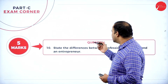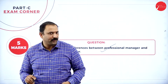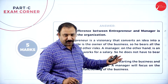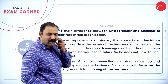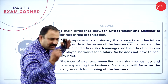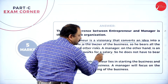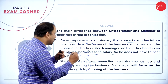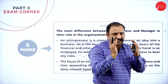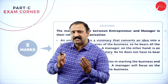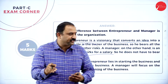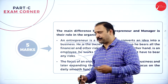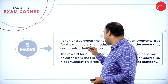Next: state the difference between a professional manager and an entrepreneur. An entrepreneur is a visionary person who converts an idea into a business — he is the owner and bears all the risk. A manager is only an employee who works for a salary without bearing risk. The focus of entrepreneurship is on creating and expanding business, while the manager's focus is on functioning the business.